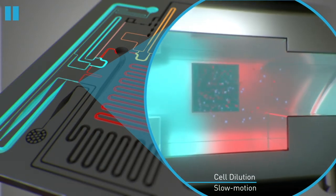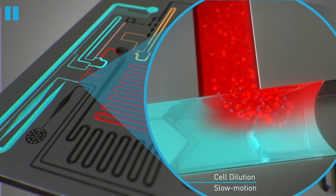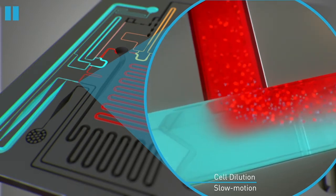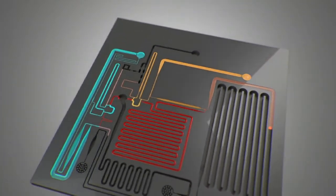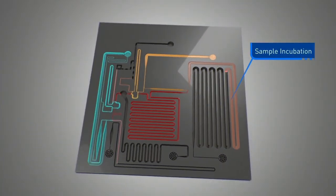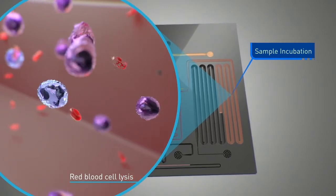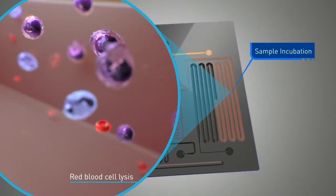For CBC testing, two reagents are used. The first dilutes the red blood cells to make them easier to count and to reveal the platelets. The second reagent lyses the red blood cells. Their cell membranes are broken down, thereby making white blood cells more visible.